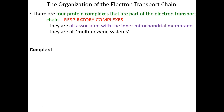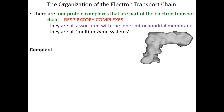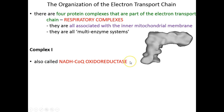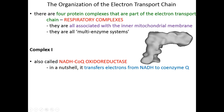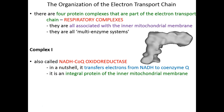The first complex is, not surprisingly, called Complex I. It looks like a fallen-over L. It goes by a fancier name — NADH CoQ oxidoreductase — and I encourage you to know this fancier name, not because I'll ask you to memorize it, but because this name tells you more about what's going on with the electrons than 'Complex I' ever will. We can see that NADH is going to be oxidized while CoQ is going to be reduced. Complex I transfers electrons from NADH to CoQ. It is an integral protein on the inner mitochondrial membrane.